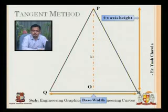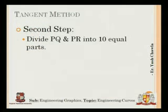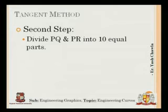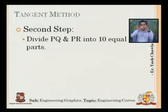The next step is to divide PQ and PR into 10 equal parts. PQ and PR are the slant sides of the triangle — PQ is on the left-hand side and PR on the right-hand side. Now remember: if you are dividing one side from P to R as 1, 2, 3, 4, 5, 6, the other side would be the opposite. On one side I'll mark 1, 2, 3, 4, 5, 6, 7 and on the right side also 1, 2, 3, 4, 5, 6, 7.